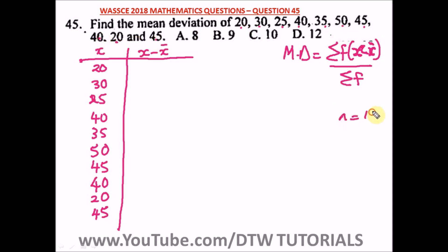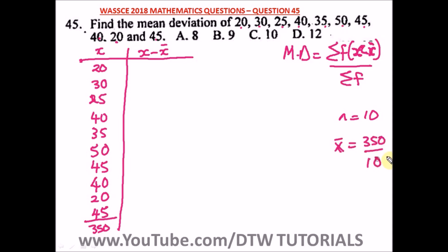Summing all the values gives us 350. So the mean equals 350 divided by 10, which is 35. Our mean (x-bar) is 35.